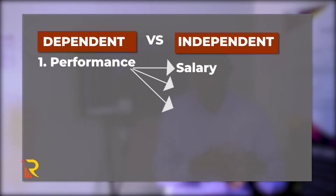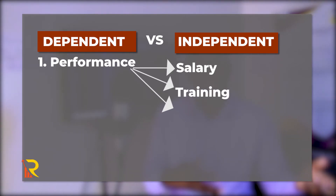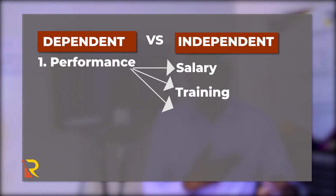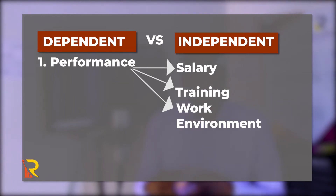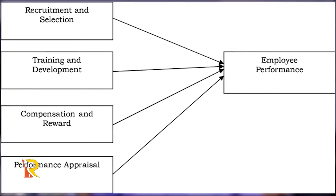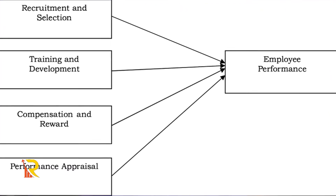Performance changes when the salary of an employee is changed; it changes when training is introduced; it changes when the work environment is changed. That makes performance dependent on salary, work environment, training, and other factors — so performance is a dependent variable. Training, on the other hand, does not necessarily change when performance changes, so training is independent of performance and therefore is an independent variable. That relationship is usually represented in a diagram, with an arrow showing the direction of the relationship.